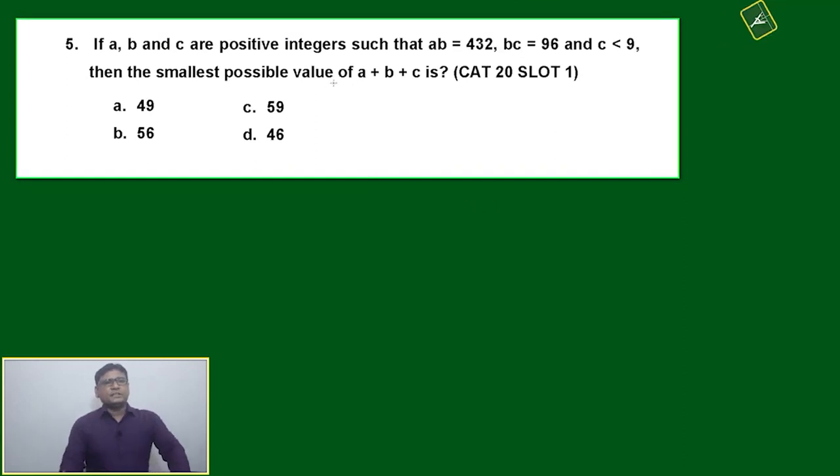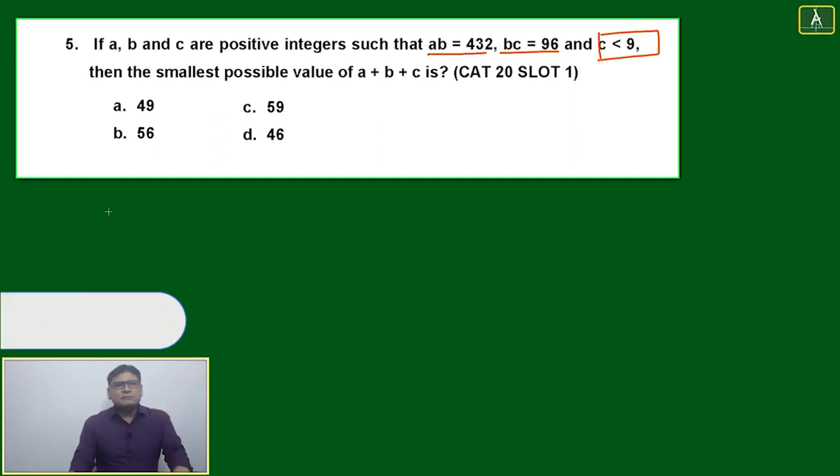This is tricky. a, b, and c are positive integers such that ab equals 432, bc equals 96, and c must be less than 9. After reading this, what will come to your mind? If c is less than 9, it means c is having restrictions.